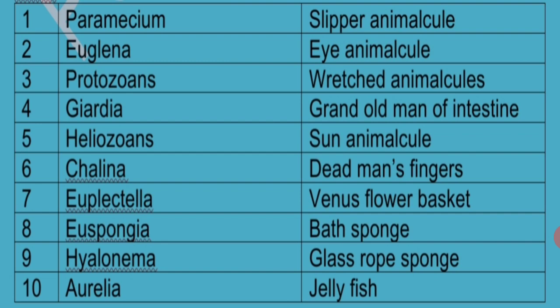Paramecium is called Slipper Animalcule because of its slipper-like shape. Euglena is called Eye Animalcule because of the presence of eye spot or stigma. Protozoans are called Wretched Animalcules by Anthony van Leeuwenhoek.